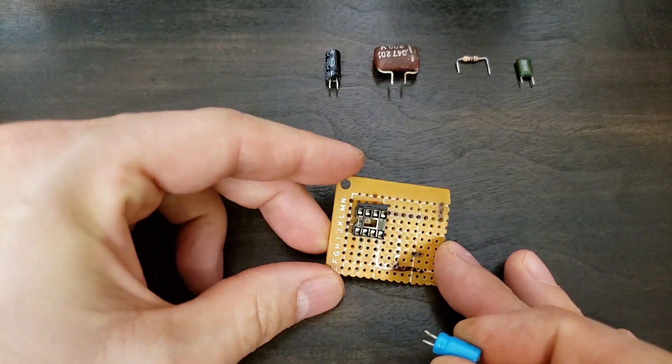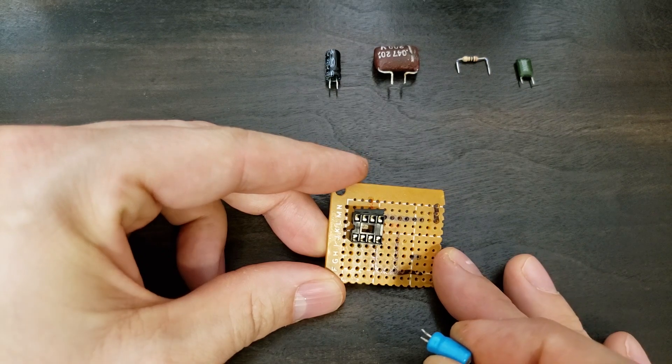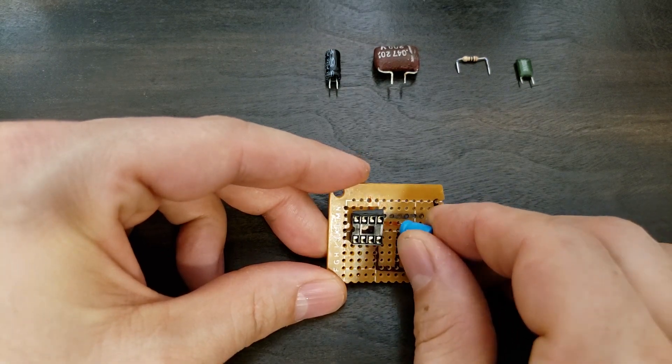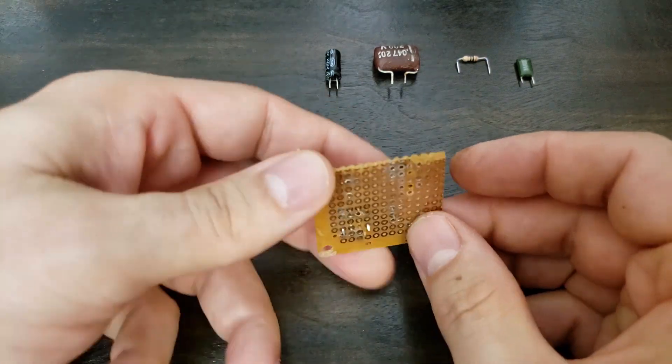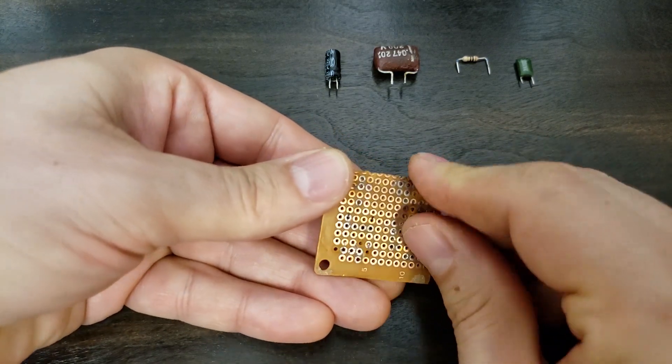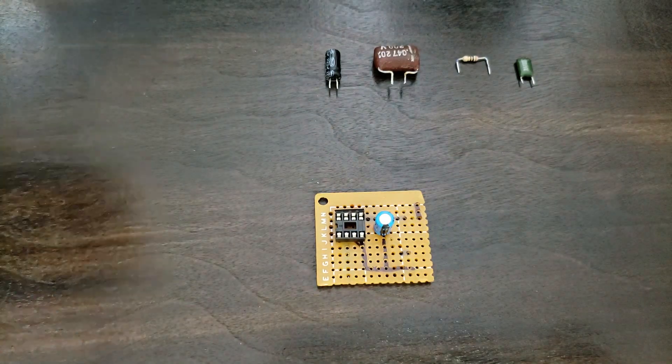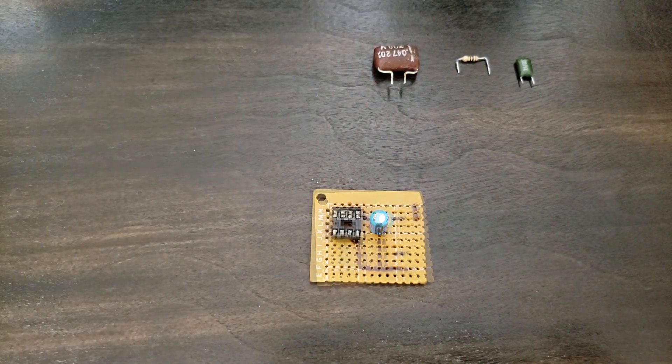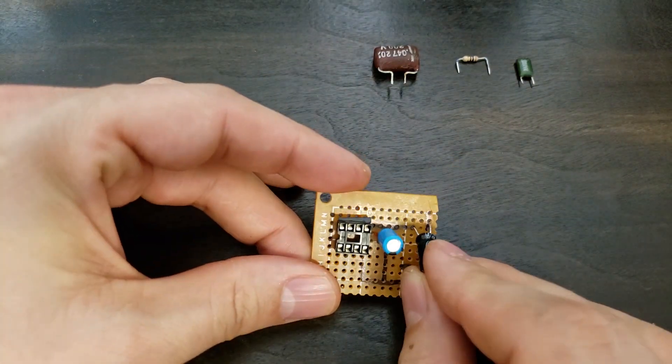Now add the power supply capacitor, bending pins a bit as you go to hold everything in place. Next add the output capacitor and the 10 ohm resistor.